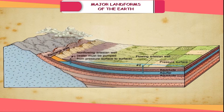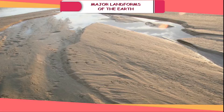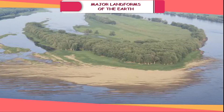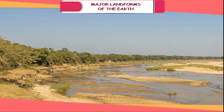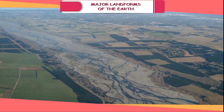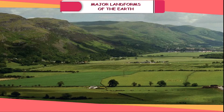Plains are the flat, low-lying areas of land. Most plains are formed by rivers and their tributaries. The rivers bring sand, silt and clay from higher elevations and deposit the same at lower elevations. The plains formed by the depositional work of running water are called alluvial plains. The Indo-Gangetic plain is an example of an alluvial plain. Plains are also formed by the movement of glaciers and wind. Generally, plains are very fertile and support a huge population.